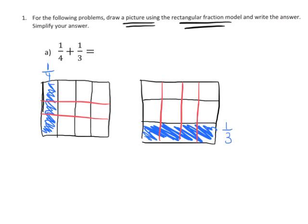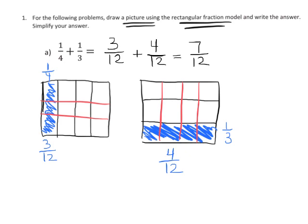Now instead of one-fourth, I have three-twelfths, and instead of one-third, I have four-twelfths. Suddenly I have common denominators. So I now have three-twelfths plus four-twelfths, and I can add those together to get seven-twelfths total.